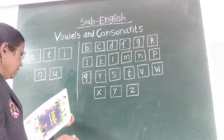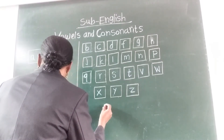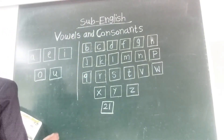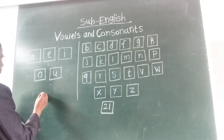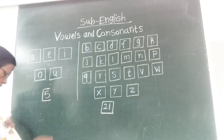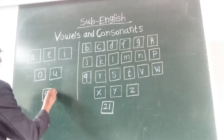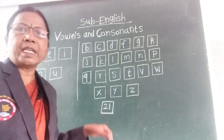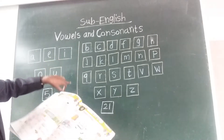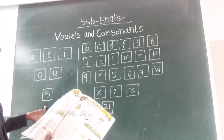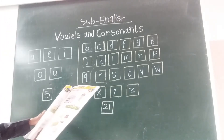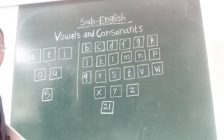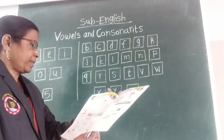How many consonants are there? Twenty-one. So students, our alphabet letters — how many letters are there in total? Total letters: 26. Twenty-six letters in the alphabet — 5 are vowels and 21 are consonants.